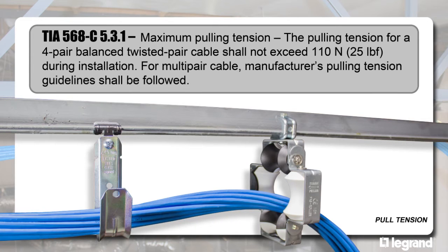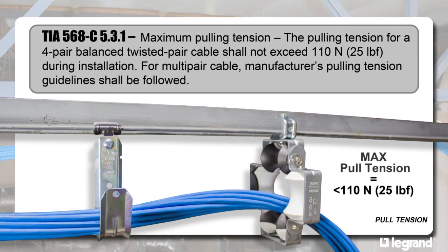The maximum pull tension should not exceed 25 pounds during installation to prevent damage to the cable. It is also best to use a cable pulley when pulling cable through tight bends.